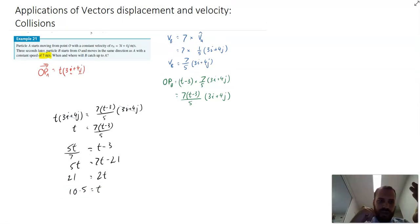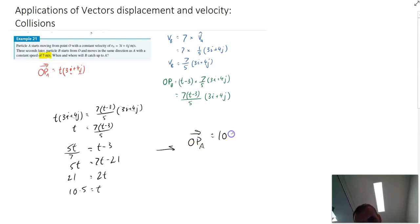So after 10.5 seconds, particle B will be exactly where particle A is. And the question was when and where will B catch up to A. So we have the when. We just don't have the where yet. If we sub 10.5 into either of these functions, we'll get the where.